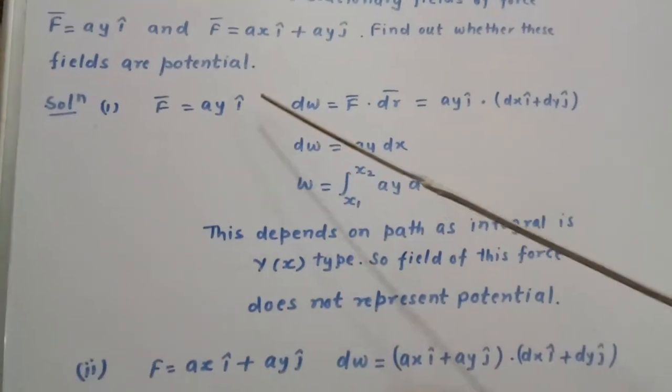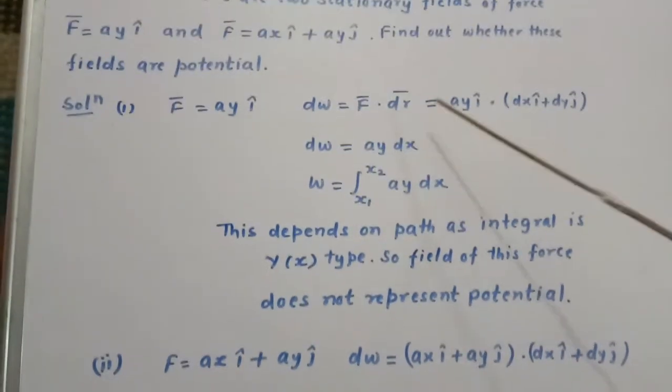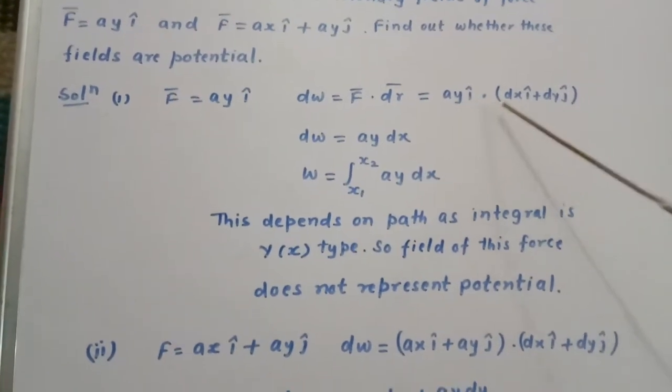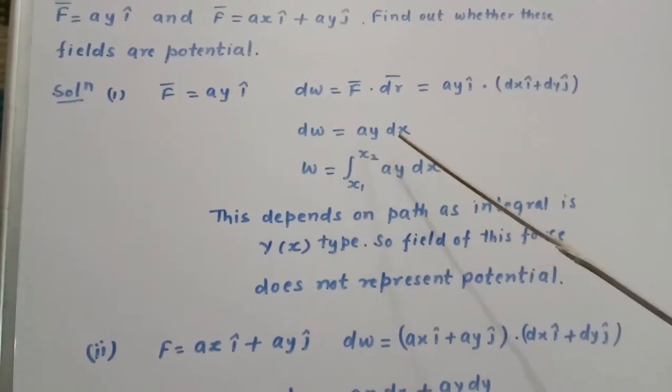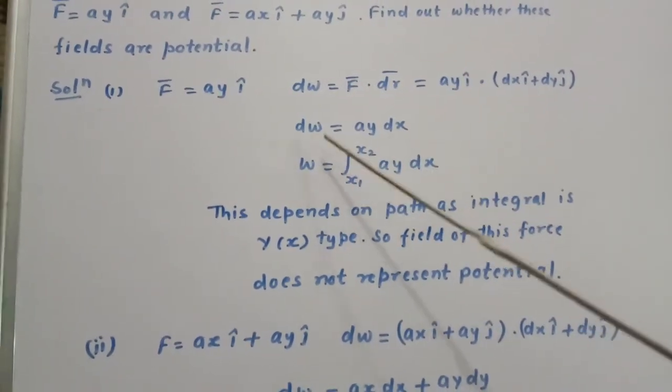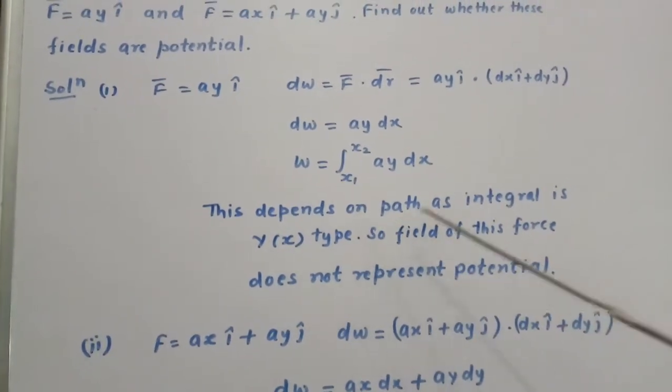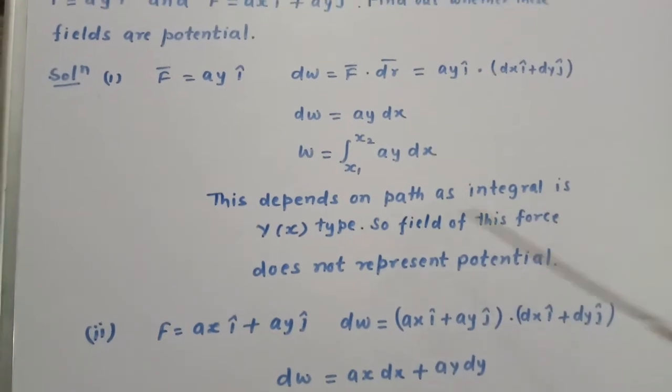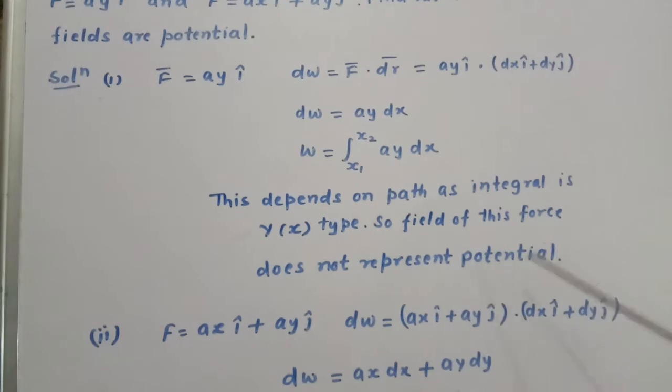First case: F = ay i cap. We find dW = F dot dr. We put the value ay i cap dot (dx i cap plus dy j cap), that gives dW = ay dx, or total work W = integral from x1 to x2 of ay dx. This depends on path as integral is y(x) type, so field of this force does not represent potential.